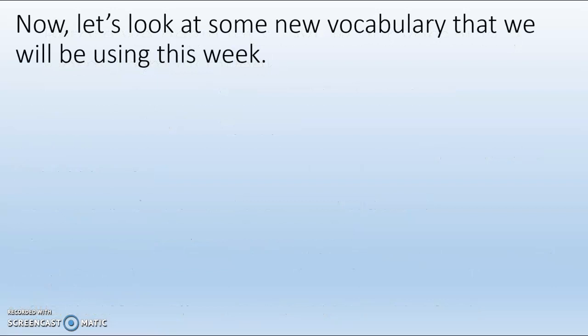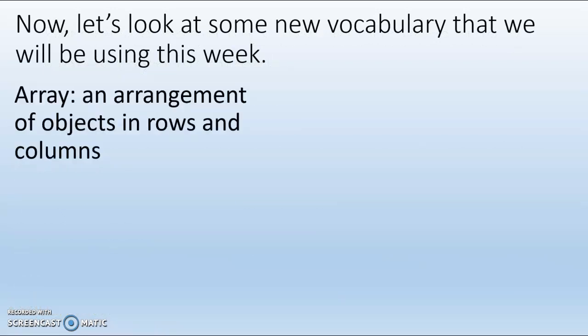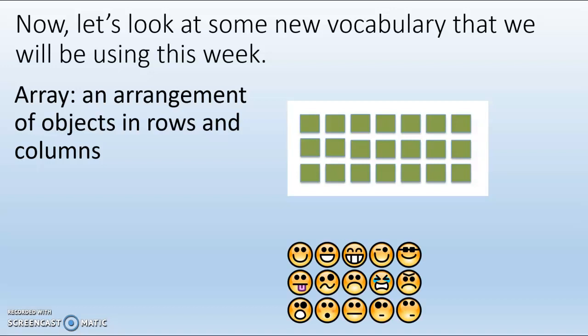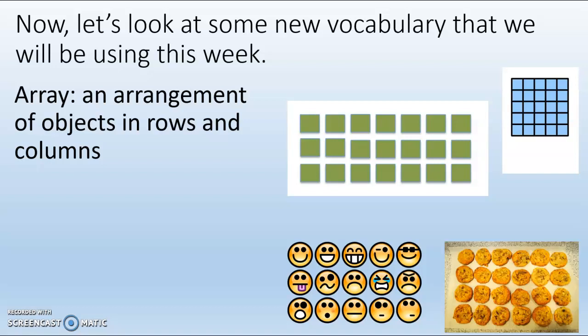Now let's look at some new vocabulary we're going to use this week. The first word is array. An array is an arrangement of objects in rows and columns. This is an array. This is an array of emojis. We have another array here and an array of cookies.